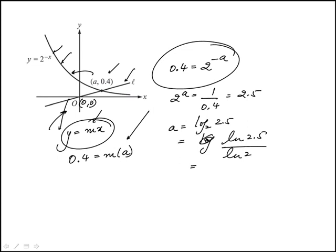I can compute what a is from this. So natural log of 2.5 divided by natural log of 2, this is 1.322.